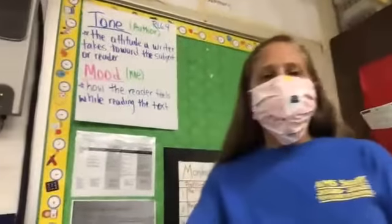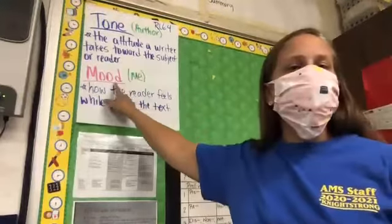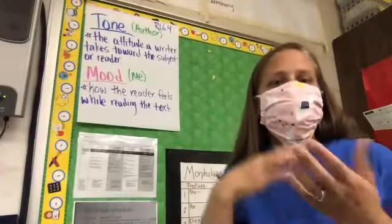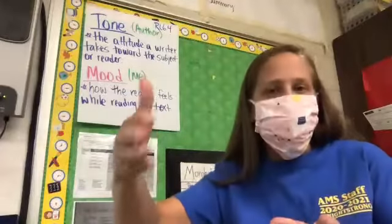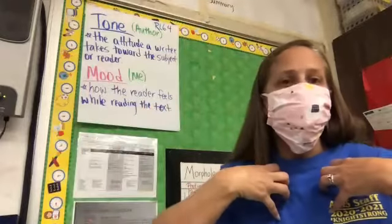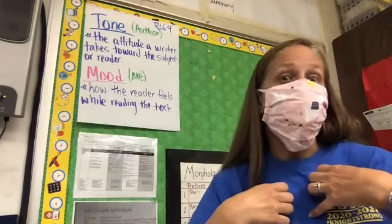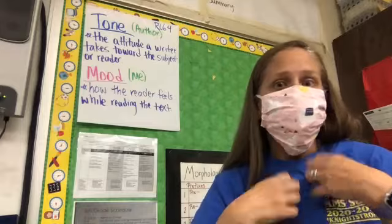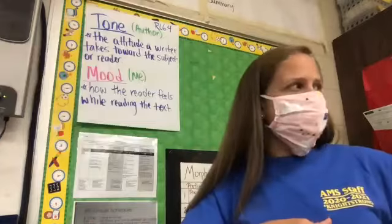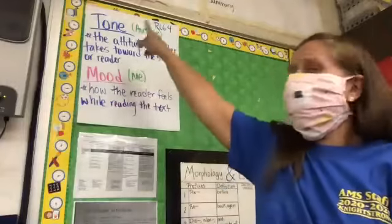I added this anchor chart so it can hang in the room, and I'll take a picture of it and put it on the Canvas site. Remember that mood is about you — it's about the reader, it's how you're feeling. If you feel sad, that's the mood. The tone is what the author sets — the attitude that they have. So the tone would be like mysterious, but how would you feel if it was mysterious? Scared. So they set the tone as mysterious; you feel scared. The tone is set by the author. The mood is how you feel. Mood — me. Tone — author.